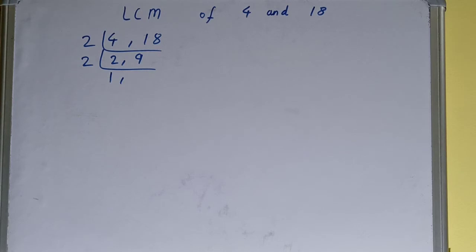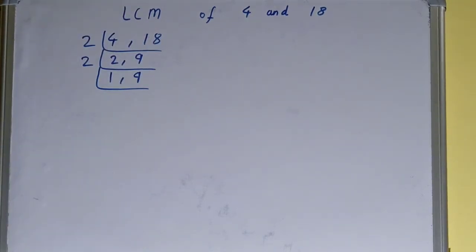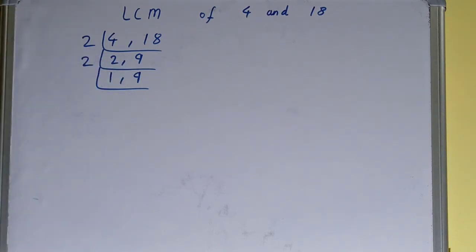is not divisible by 2, so we'll leave it like that. We'll just copy it down. Now again, if we check, is any of the numbers divisible by 2? None of the numbers is divisible, so we go to the next prime number, that is 3.